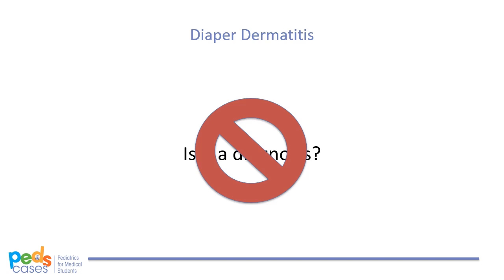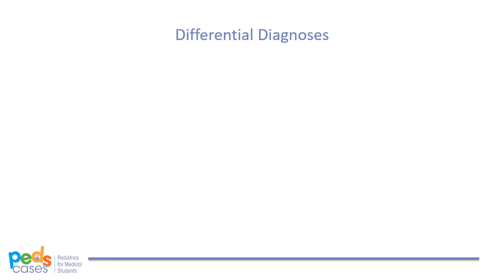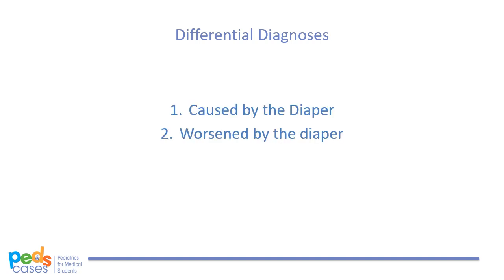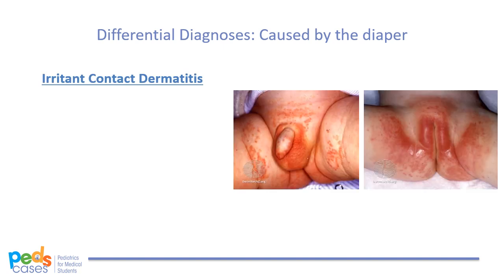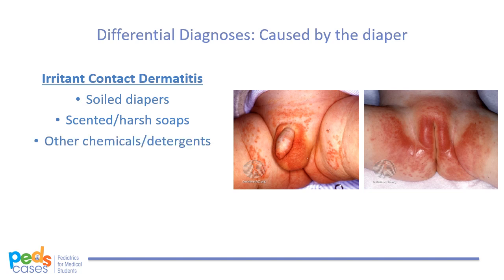Thinking about the different types of diaper rashes, I like to think of it as rashes caused by the diaper, rashes worsened by the diaper, and those completely independent of the diaper. Starting with rashes caused by the diaper, the most common would be irritant contact dermatitis. The moist environment of the diaper and the prolonged contact and friction of soiled diapers irritate sensitive skin. Using scented or harsh soaps, chemicals, or detergents can also irritate the skin.